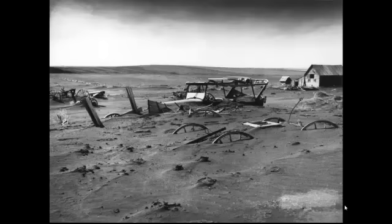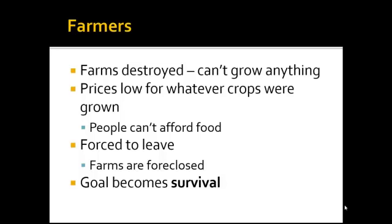These dust storms would bury farmland, bury houses, and destroy those things. So these farmers couldn't grow anything. And even if they could grow crops, because people didn't have money to buy food, they couldn't sell those crops for enough to make their mortgage payments and keep their farms. A lot of these people were forced to leave, and farms were foreclosed on, causing people to really have nowhere to go. So the goal went from being a landowner with your own farm and your own piece of the American dream to simply trying to survive.